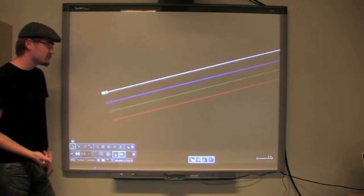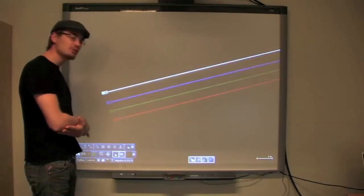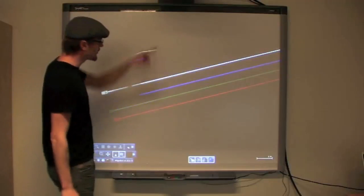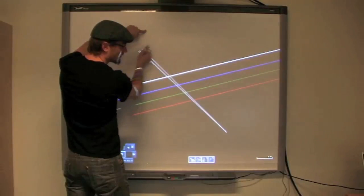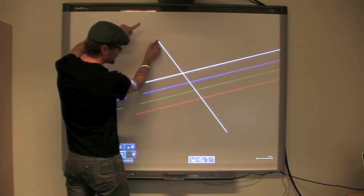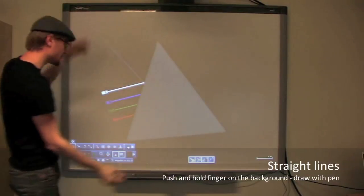Now for this scene to be something interesting, we need a prism. Now for a prism to be good, we need to have the straight edges. So how do we draw straight edges? Simple. Press and hold a finger on the background. And using the sketch tool, you draw something a perfect straight edge. Lift your finger. Down again. And there. You have a nice prism.